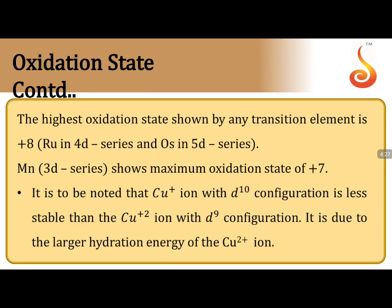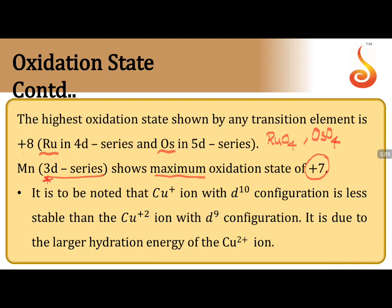Which transition elements exhibit the highest oxidation state? Ruthenium and osmium show +8 oxidation state in compounds like RuO₄ and OsO₄. Manganese is the only 3d-series element that can show the maximum oxidation state of +7. This has been asked many times in JEE and NEET — the only element in the 3d series showing the highest oxidation state is manganese, with +7.